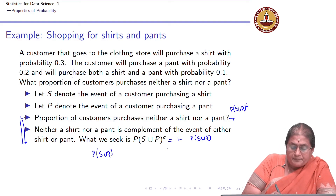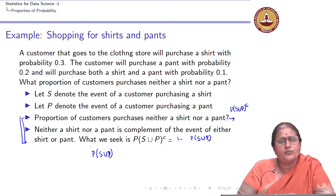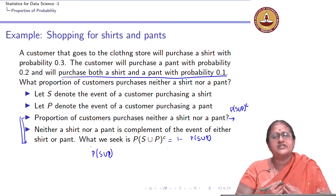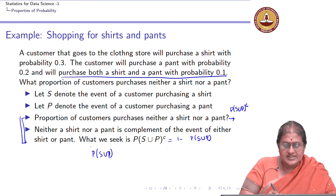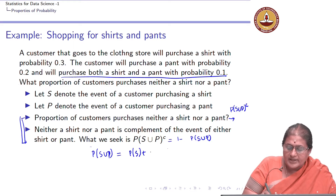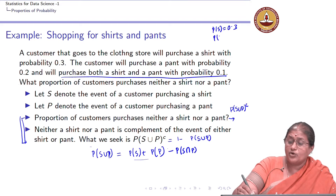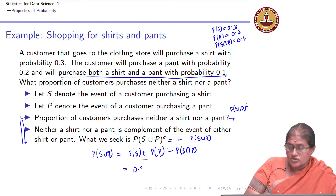What is the probability of S union P? First we ask: are S and P disjoint? Does a person who buys a shirt not buy a pant, or vice versa? The answer is no, because we have a probability of a person buying both a shirt and a pant. Since they are not disjoint, by the additive rule: probability of S union P = probability of S + probability of P − probability of S intersection P = 0.3 + 0.2 − 0.1 = 0.4.